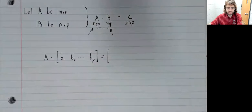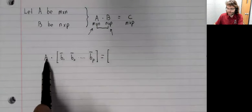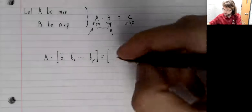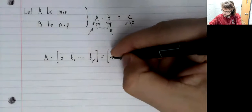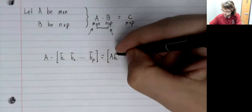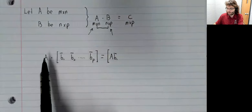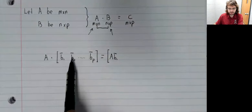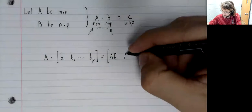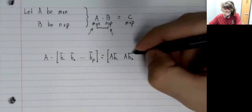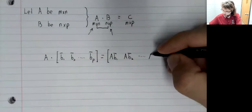We'll define A times B to be the matrix whose first column is A times the first column of B, whose second column is A times the second column of B, and so on.